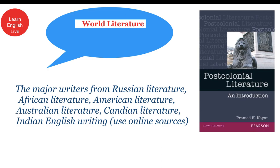Next is world literature. For world literature, focus on major writers from various countries — Russian literature, American literature, Australian literature, African literature, Canadian literature. Use Google, Wikipedia, SparkNotes, or CliffsNotes to read about major authors without needing to go too deep. For Indian English writing, use any standard book along with online sources.